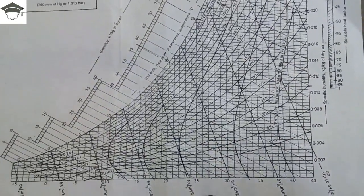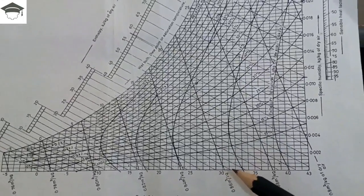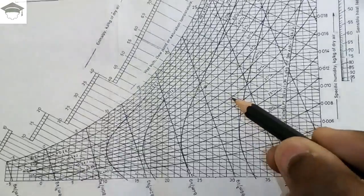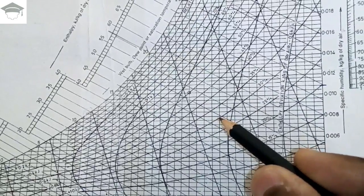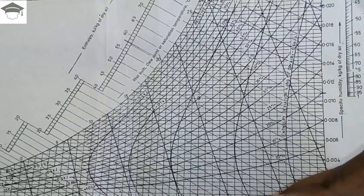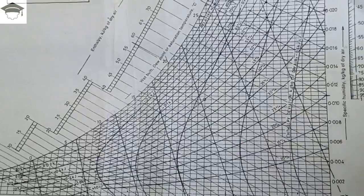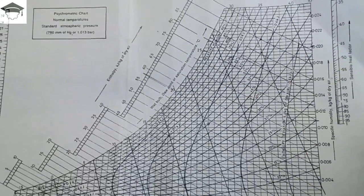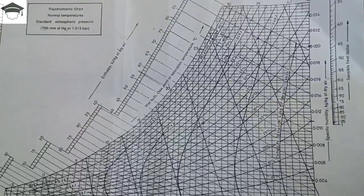If you have inlet and outlet conditions — for example, 31 degrees and 40% RH for inlet — you locate 31 degrees on the x-axis and move upward to the 30% RH curve to mark that point. For an exit condition of 20 degrees and 15% RH, you mark that point too and join them. From this line you can find sensible heat factor, sensible heat, latent heat, grand sensible heat factor, moisture condensed, and specific humidity.